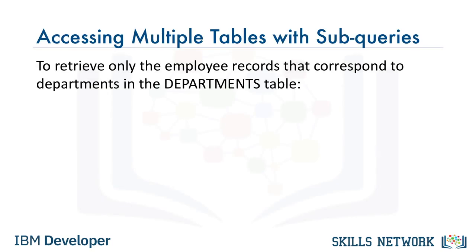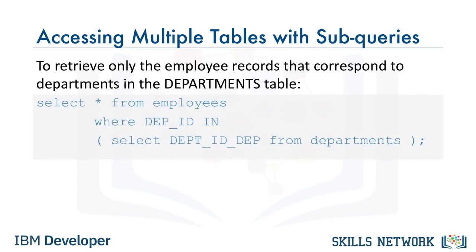In a previous video, we learned how to use subqueries. Now let's use subqueries to work with multiple tables. If we want to retrieve only the employee records from the employees table for which a department ID exists in the departments table, we can use a subquery as follows: SELECT * FROM employees WHERE department_ID IN (SELECT department_ID FROM departments). Here, the outer query accesses the employees table, and the subquery on the departments table is used for filtering the result set of the outer query.